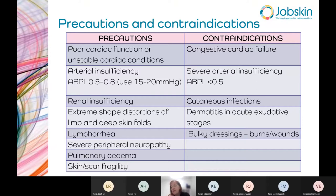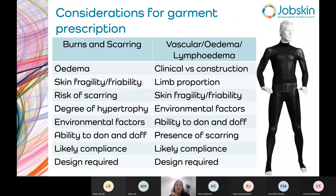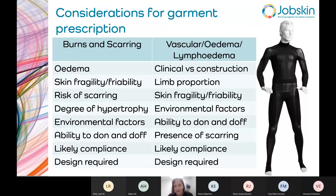Contraindications include CCF and severe arterial insufficiency — if ABPI is under 0.5, it's not wise to apply compression. If ABPI is over 1.2, you may question the value of compression particularly for vascular indications. Also avoid compression if there are cutaneous infections, exudative dermatitis, or bulky dressings.